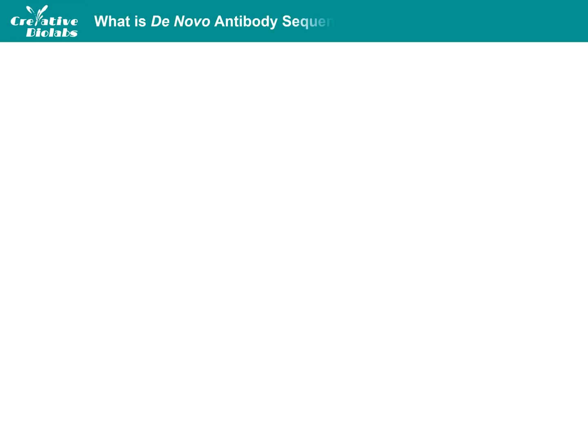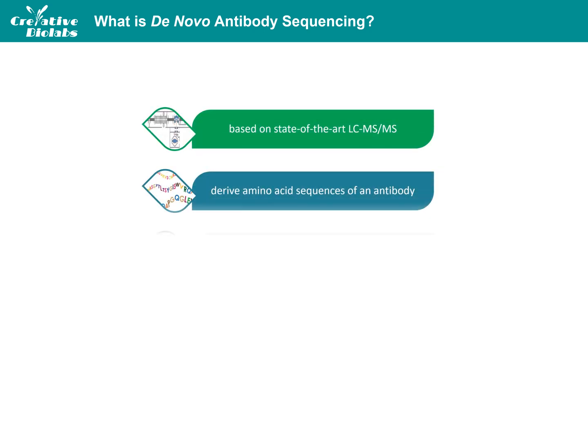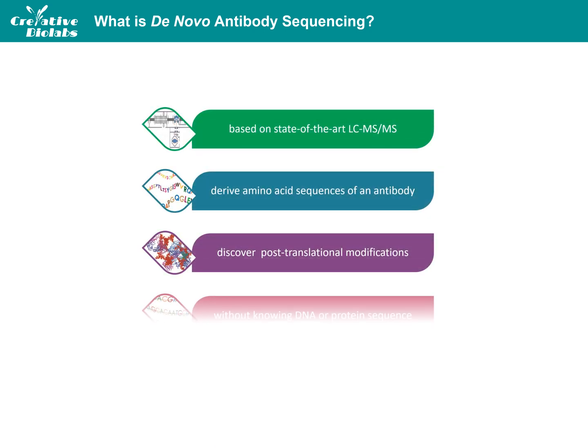What is de novo antibody sequencing? Based on chromatography, tandem mass spectrometry technology, and computational algorithms, de novo antibody sequencing technique was established to derive the amino acid sequence of an antibody and discover any associated post-translational modifications without knowing the DNA or protein sequence.